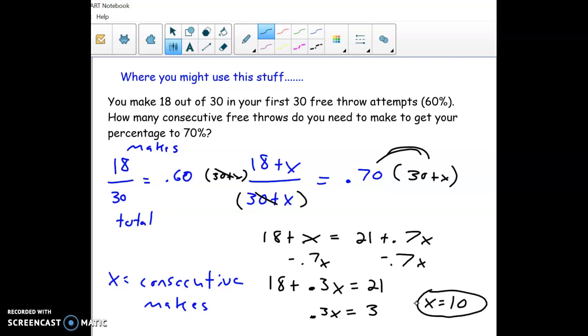So we need to make 10 consecutive free throws to get to 70%. And we can sort of test it if we're not sure. We can go back here and say, okay, if x were 10, I'd have 28 total makes and 40 total free throws. And if you divide those out, that should give us 70%. So that's actually surprising. You have to make 10 more in a row just to get up 10%. So kind of tricky. But I thought that was a cool example of where you might use this. And I think these might show up on a test or quiz. So I want to make sure to include them here in the lesson. All right, that's it. Thank you for watching.